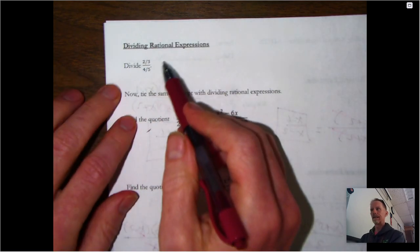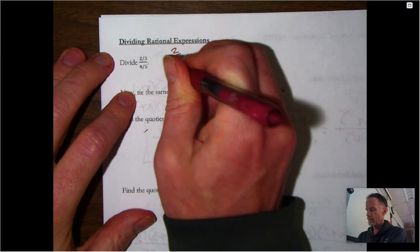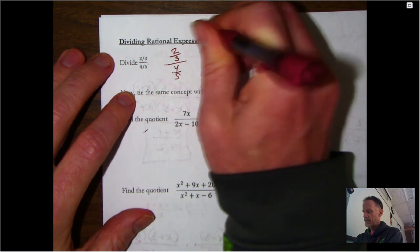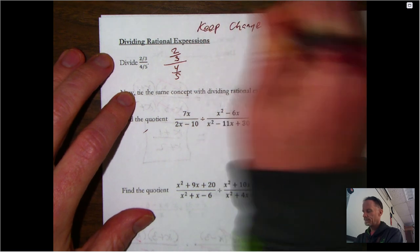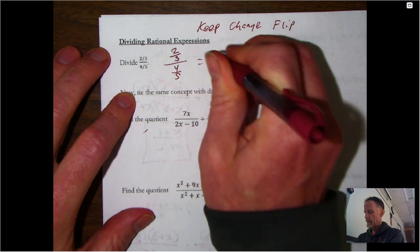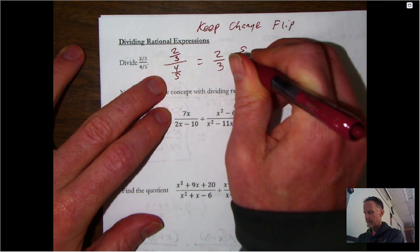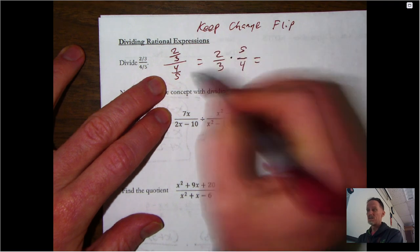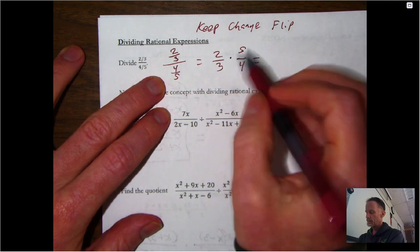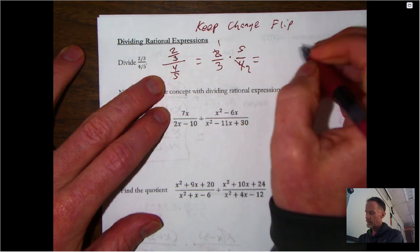Division turns out to be nothing more than multiplication. Going back to basic fractions: if we have (2/3) ÷ (4/5), your teacher might have used the phrase 'keep, change, flip.' We keep the first fraction as 2/3, change the division to multiplication, and flip the second fraction to 5/4. We can simplify the 2 and 4 to 1 and 2, giving us a final answer of 5/6.